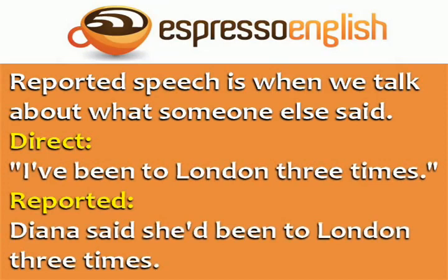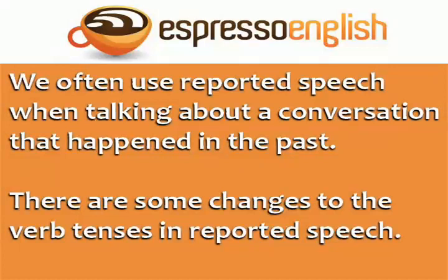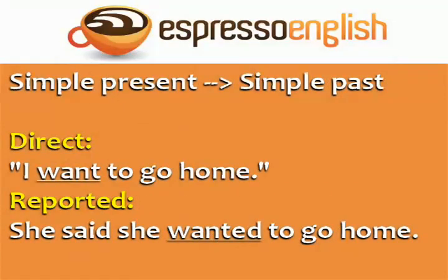For example, if your friend Diana said something, we often use reported speech when talking about a conversation that happened in the past, but there are some changes to the verb tenses in reported speech. Verbs in the simple present become verbs in the simple past.